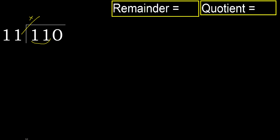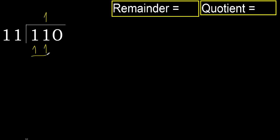11 multiplied by 2 is 22, which is greater. So multiply by 1: 11 is not greater. Subtract 11 minus 11 equals 0.